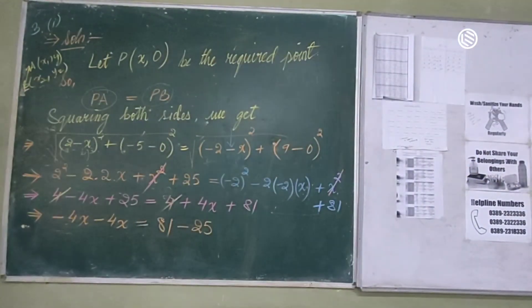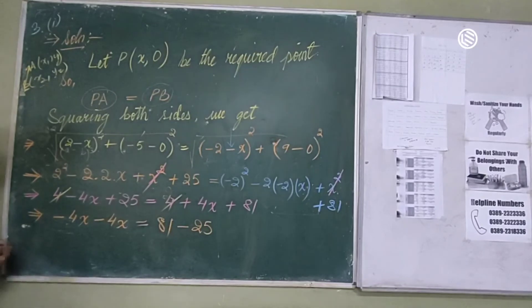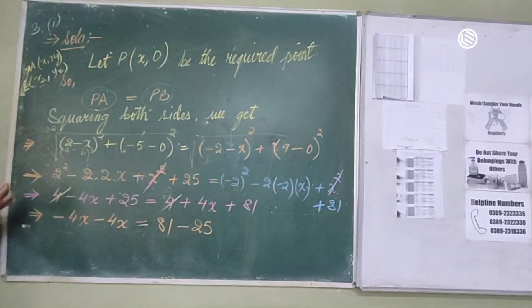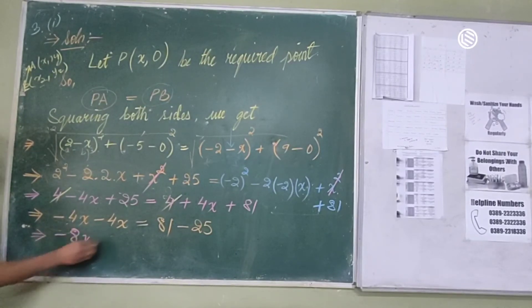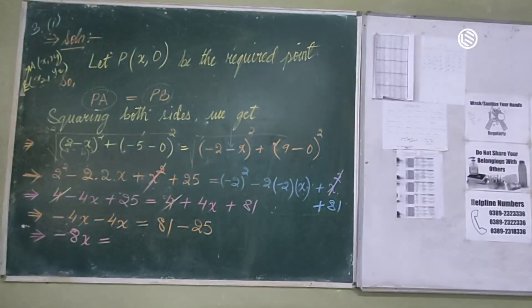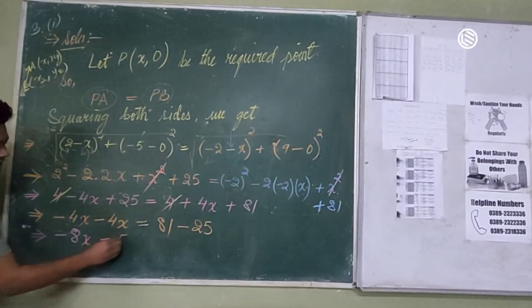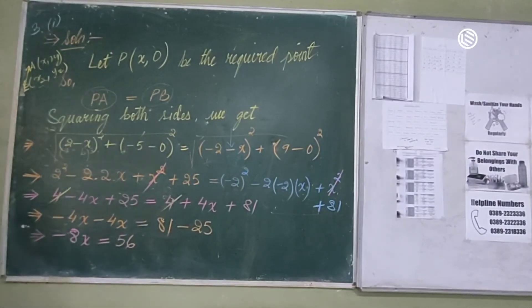Minus 4. Minus 4. Minus 4. Minus 8. X is equal to 81 minus 25 — which is 56. Very good. So x coordinate — that's what — x axis.